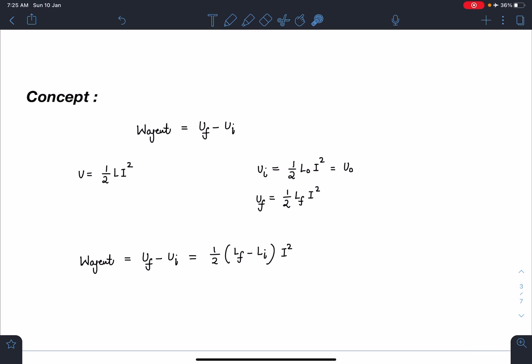I know this initial energy is going to be U₀ which is half L₀I². Instead of giving current and self inductance of the loop they are giving you the value of U₀. If somehow I can find out this final inductance of this modified frame I can write the final energy and then my work done, the net external work done, is going to be U_final - U_initial which is half (L_final - L_initial) times I².